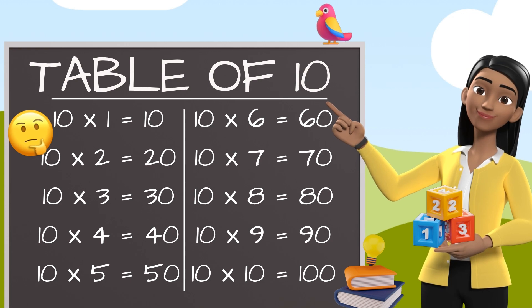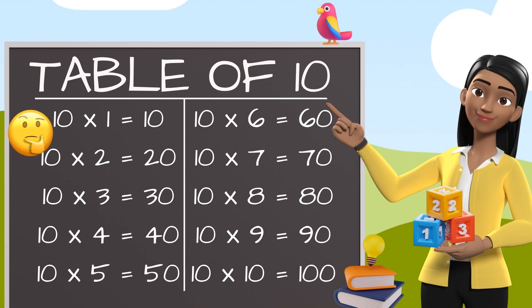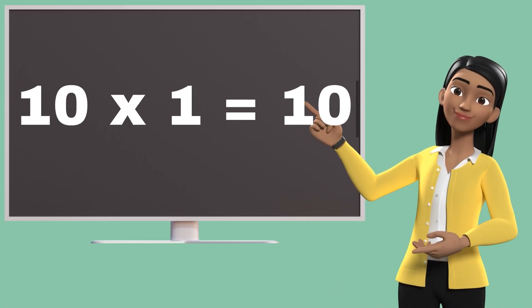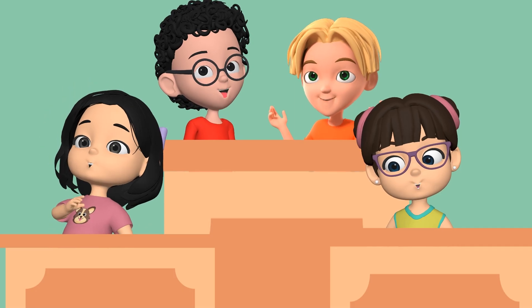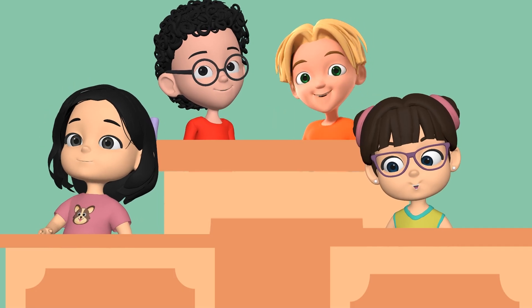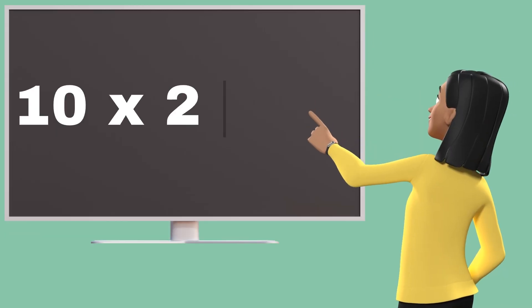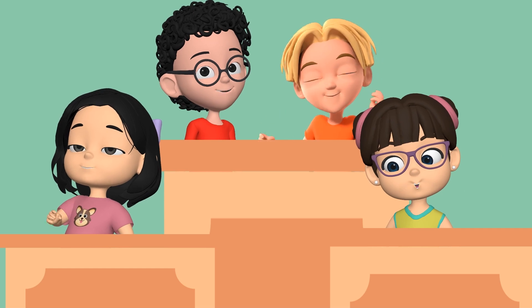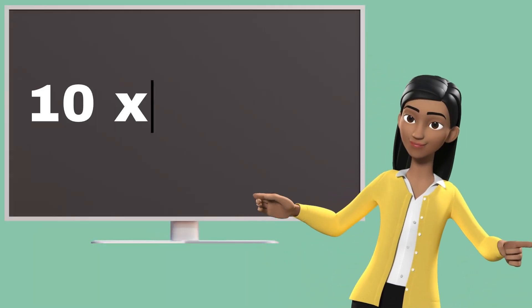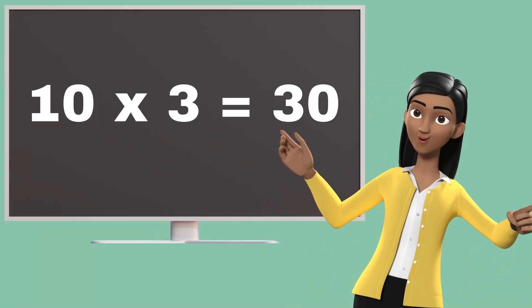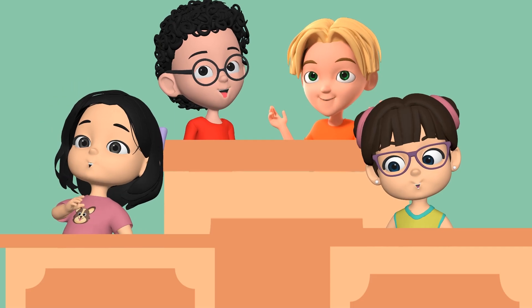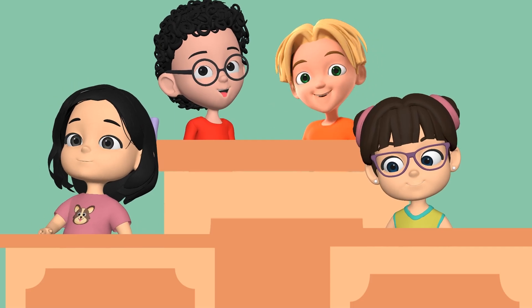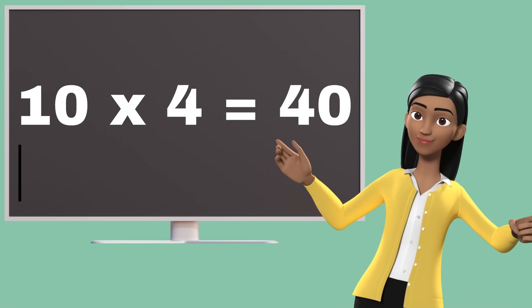Table of 10. Ten ones are ten. Ten ones are ten. Ten twos are twenty. Ten twos are twenty. Ten threes are thirty. Ten threes are thirty. Ten fours are forty.